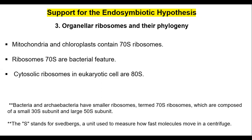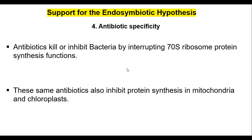Even more evidence is antibiotic specificity. There is a set of antibiotics that kill bacterial cells by interrupting ribosomal biosynthesis — they specifically target 70S ribosomes. If you test those antibiotics on isolated mitochondria and chloroplasts, they will have the same effect. Antibiotics don't kill eukaryotes, but they do kill mitochondria and chloroplasts within eukaryotes. This confirms those organelles are bacterial in origin.